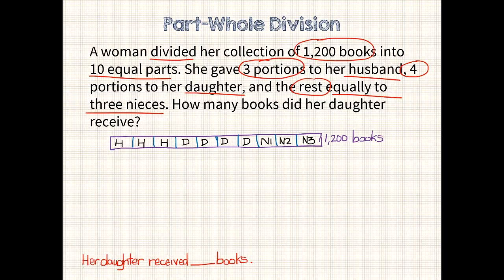Now let's designate which parts go to each person. 3 parts to her husband, 4 parts to her daughter, and 3 parts to her nieces. Where does the question mark go? That's right, we need to know how many books her daughter gets. So we bracket those pieces and put our question mark. Can you see what our first step will be? Yes, I need to find out how many books are in each portion. If 10 units equals 1,200 books, then 1 unit equals 1,200 divided by 10, which is 120 books per portion.